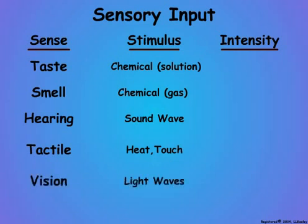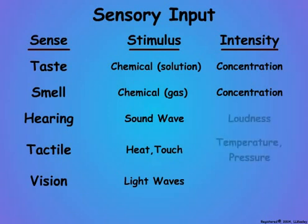If the dendrite is a sensory receptor, it responds to the intensity of the sensory stimulus. In the case of taste and smell, it is the amount of the chemical. For hearing or touch, it is the loudness of the sound or the heat or pressure on the skin. And for vision, it is the brightness of the light.